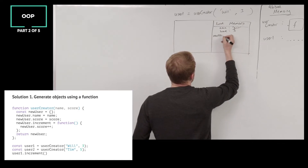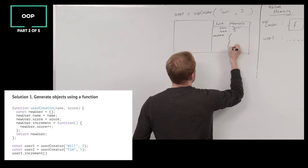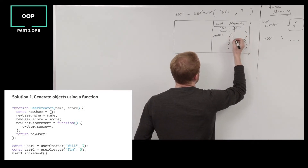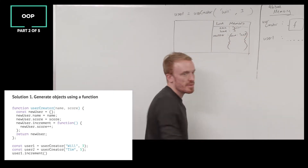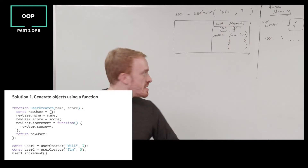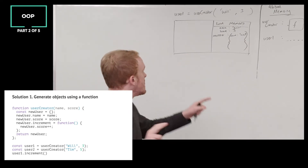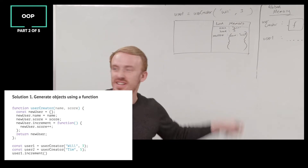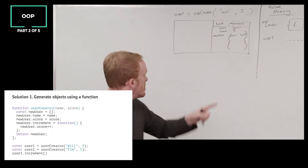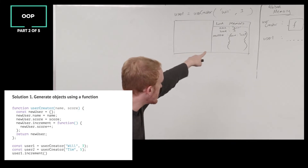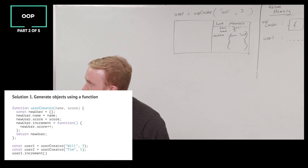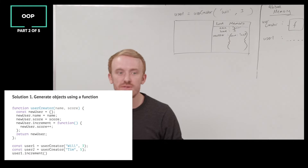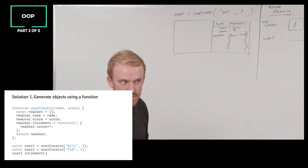Now we enter the body of the function. We're going to create an object - new user - assigned via object literal. And assign what properties? Property name with the value of will - the name argument. New user exists as an empty object. Dot name says: add a property name and assign to it the name argument, which was stored in memory as will. The name on the left-hand side is a new property we're creating; the name on the right-hand side is retrieving from memory the argument with the value will.